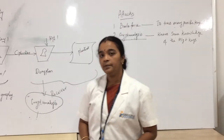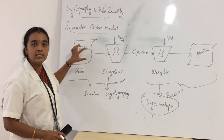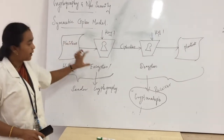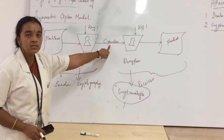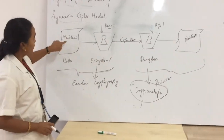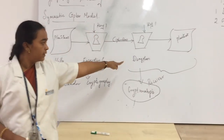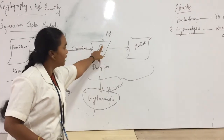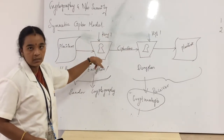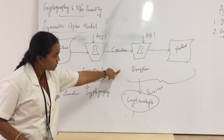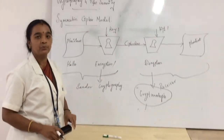The conclusions of this topic: the Symmetric Cipher Model has five basic components — Plain Text, Encryption, Key, Decryption, and Cipher Text. Encryption converts Plain Text to Cipher Text with the help of a Key. Decryption converts Cipher Text to Plain Text with the help of a Key. Both sides use the same key — not different keys. That is the Symmetric Cipher Model. Thank you.